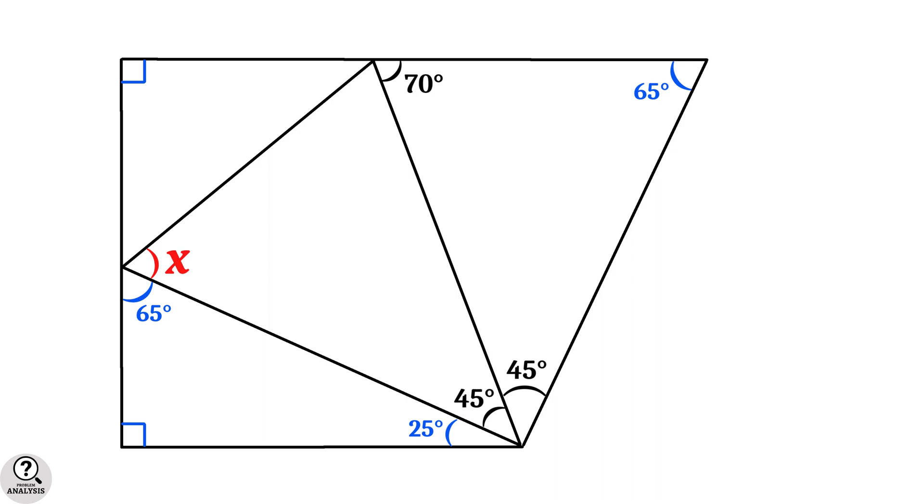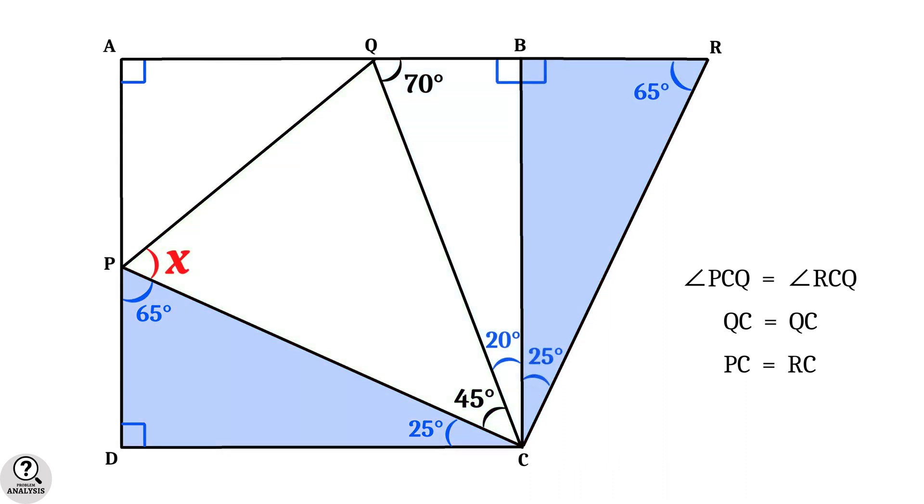Now come back to our figure. And I am giving some notations to each vertex. Observe the triangles CQR and CQP. Note that angle PCQ is equal to angle RCQ. Both are 45 degrees. The side QC is common for both triangles. And finally, PC equals RC. Because by our construction, both of these blue shaded right triangles are identical.